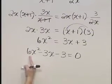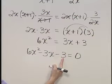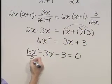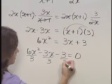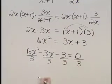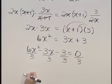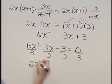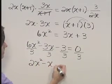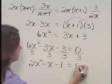At this point let's notice that there's a common factor of 3 in each of these terms. So let's divide both sides by that common factor of 3 just to clean this up a little bit. This becomes 2x squared minus x minus 1 is equal to 0.